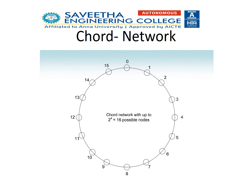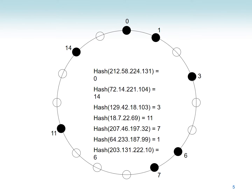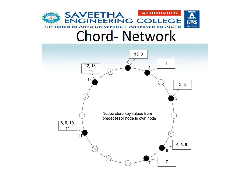In this network, totally 2 power 4, that is 16 nodes are possible, so we can have a maximum of 16 nodes. As per the hashing using SHA algorithm, only 7 nodes are available in the network instead of 16. As per the definition, key value 1 is stored in node 1. Key value 2 should be stored in node 2, but node 2 is not present, so it is stored in the successor node 3. Key values 4, 5, and 6 are stored in node 6.